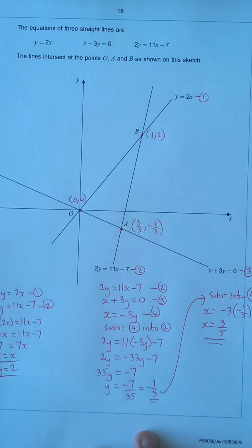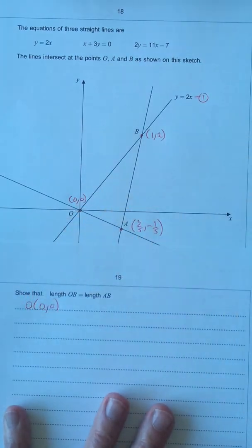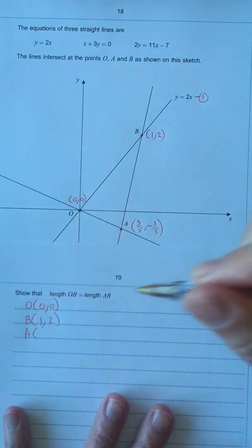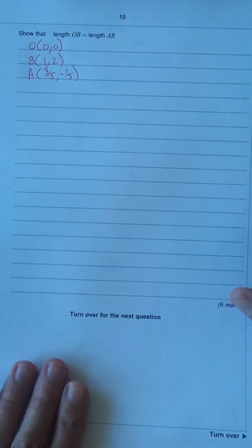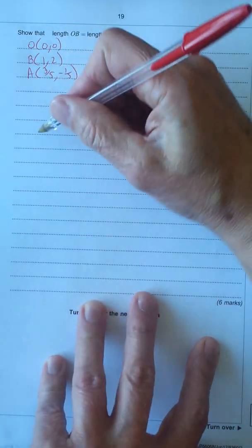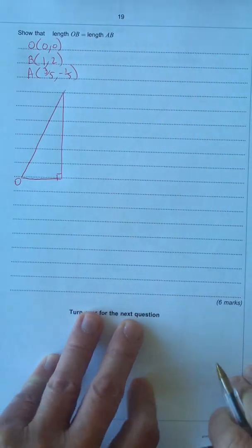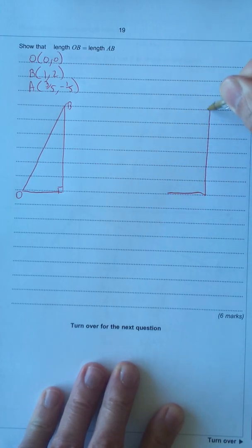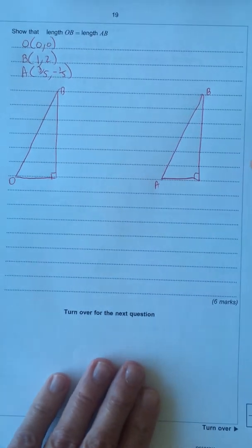Now we have all the coordinates we need, so we'll form right angle triangles and find the lengths of the sides using Pythagoras' theorem. Transferring back to the answer sheet: O is (0, 0), B is (1, 2), and A is (3/5, −1/5). The question asks us to show that length OB equals length AB, so let's form two right angle triangles — one for OB and one for AB.